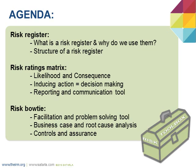Secondly, we're going to have a look at your risk ratings matrix, the primary tool you probably use to prioritize and rank your risks. To do this, we need to have an understanding of what likelihood and consequence means for your risks. We'll also look at how your risk ratings matrix can help induce action and decision-making within your organization, and how it can be used as a reporting and communication tool. Finally, we'll look at one of my favorite tools, the risk bow tie, and how it can be used as both a facilitation and problem-solving tool — including root cause analysis and how to prevent a repeat of a negative incident.